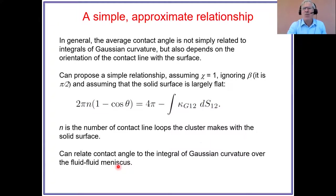So that's what we get to, a simple approximate relationship. The integral over the solid disappears because we assume that it is on average flat. So we have here 2 pi times n. We do it for each contact line loop, so n is the number of loops. This is your average contact angle, 4 pi, and then just this integral of Gaussian curvature.